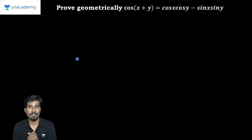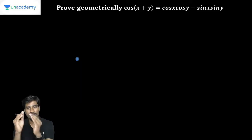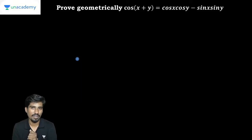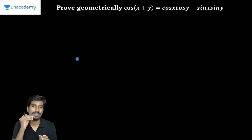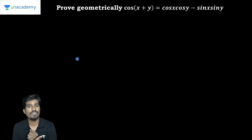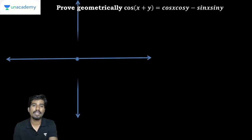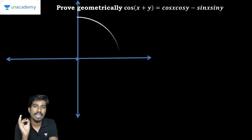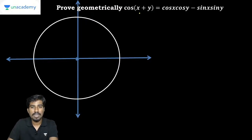If we approach this geometrically, we will consider geometric figures. All the confusion students have is about the diagram. It's very simple. We have to consider the unit circle — the radius of that circle is 1 unit.